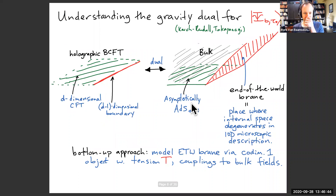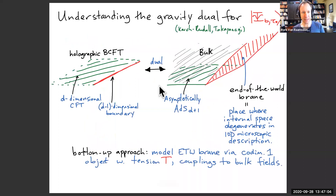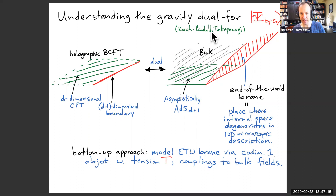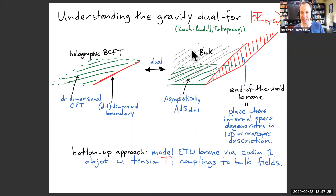I want to understand the gravity picture — what is this state dual to? First I have to talk about how we do AdS/CFT when you add a boundary to your holographic theory. The basic picture was discussed by Karch and Randall, later in detail by Takayanagi and other authors. We have a holographic CFT dual to some asymptotically AdS spacetime; we sort of remove half of it, introduce a boundary and possibly some boundary degrees of freedom, and there should be some bulk analog of cutting the CFT in half — what I'm calling an end-of-the-world brane.